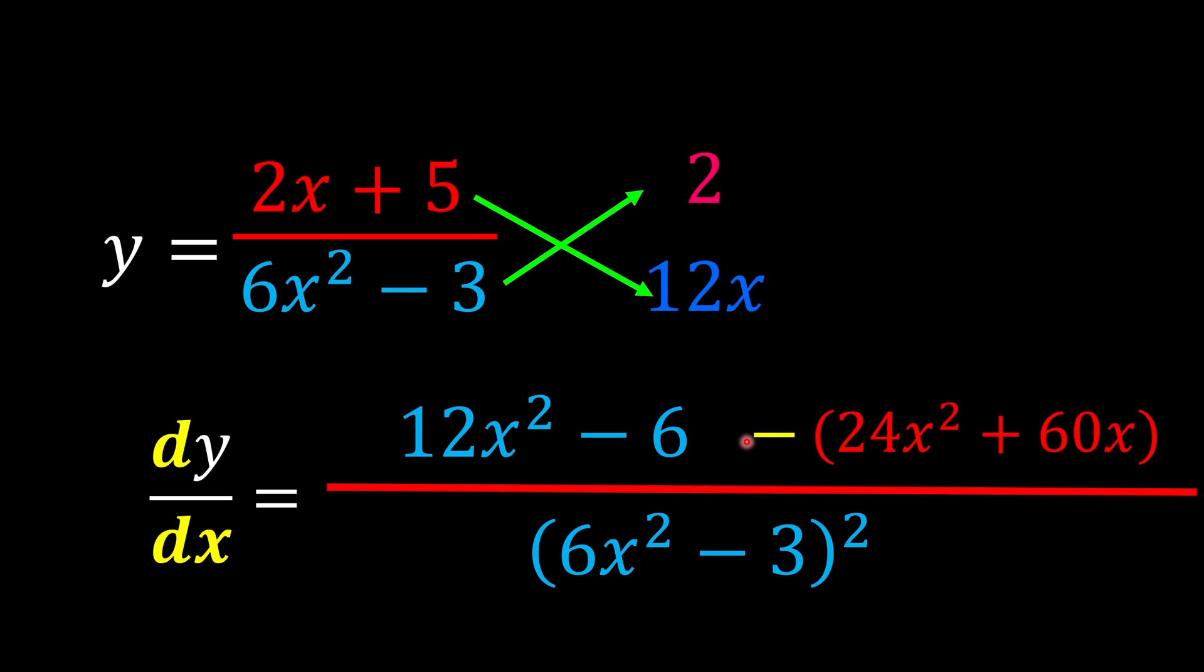Don't forget this minus is going to apply for both of the terms inside the bracket. So this is why we have minus 24x squared minus 60x. But there's one more thing. Can you see that they are like terms?